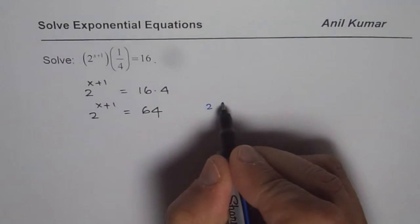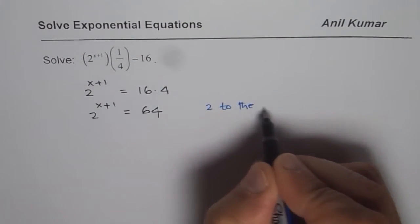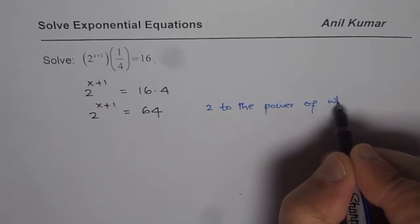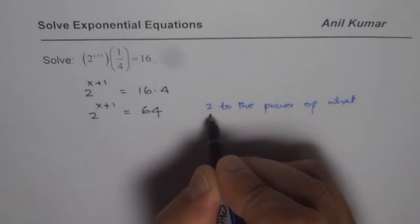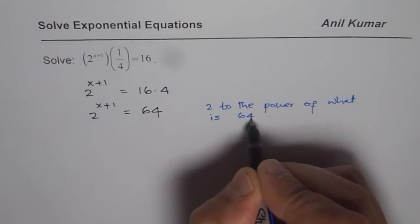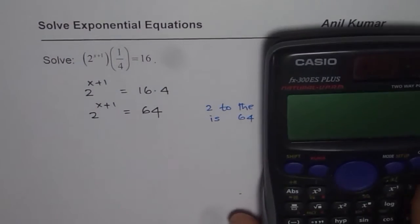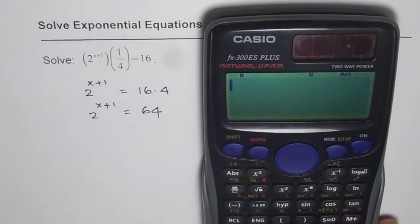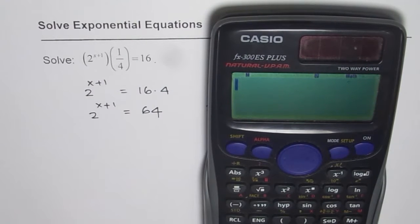2 to the power of what is 64? At times you can use the calculator. Well, 2 is a simpler number so you could do even otherwise. But we are trying to understand the method, so just check it out.